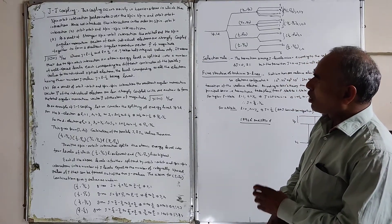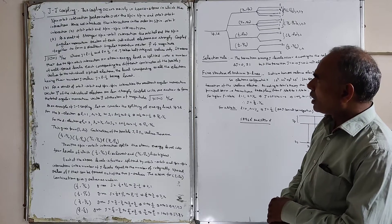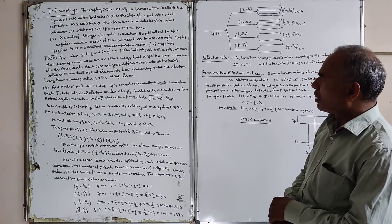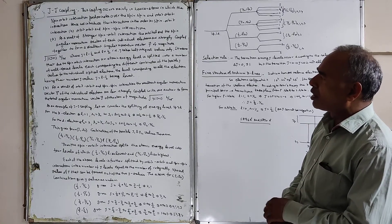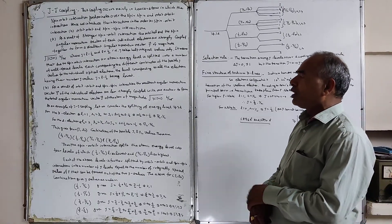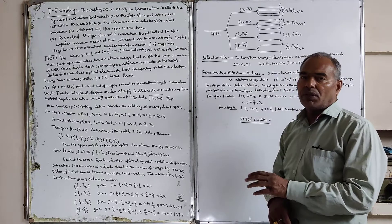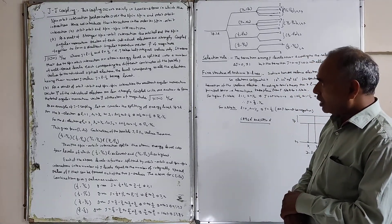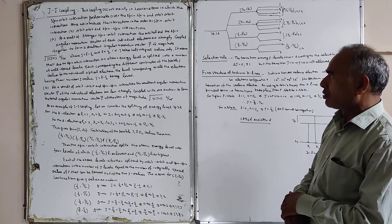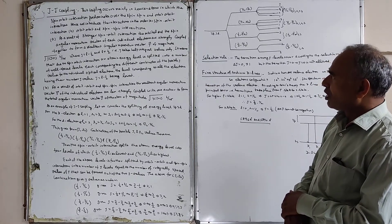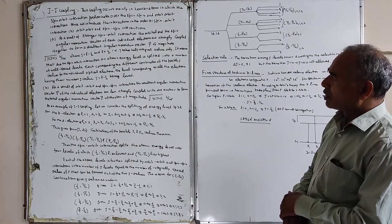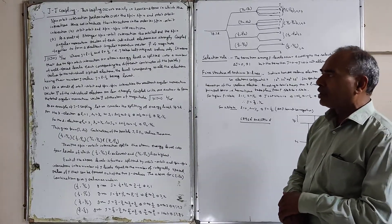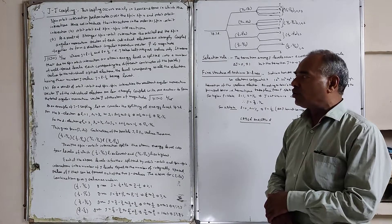As a result of the stronger spin-orbit interaction, the orbital and the spin angular momentum vectors of each individual electron are strongly coupled together to form a resultant angular momentum vector. The magnitude of the resultant angular momentum will be under root j(j+1) times h upon 2 pi.